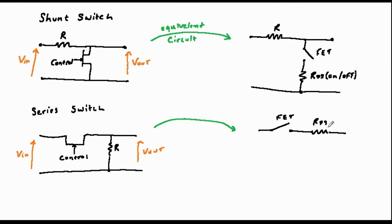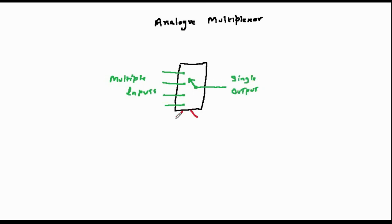But the device can be used either as a series or shunt switch, as shown on the screen. You can also buy arrays of such switches on a single chip, and this allows you to switch analog signals from multiple sources into a single wire or connection. And this is called an analog multiplexer.